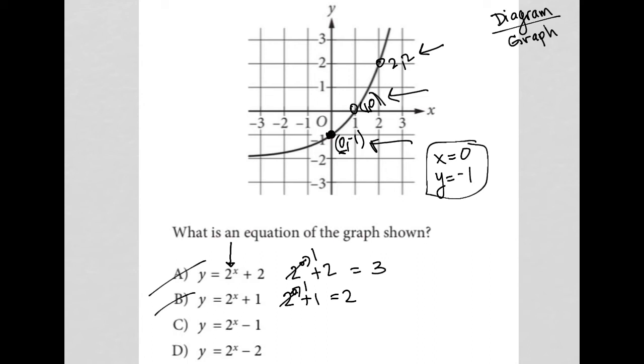For choice C, same deal. 2 to the 0 minus 1. 2 to the 0 is 1. 1 minus 1 equals 0. But I want y to equal -1, so choice C is gone.